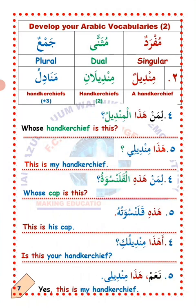Wahid, number one: Liman hadhalihi mindil? — Whose handkerchief is this? Answer: Hadha mindili — this is my handkerchief. Ithnan: Liman hadhalihi kalansuwa? — Whose cup is this? Answer: Hadhihi kalansuwatuhu — this is his cup. Arba, number four: Ahadha mindiluk? — Is this your handkerchief? Answer: Na'am, hadha mindili — yes, this is my handkerchief. La'allaka fahimt? I hope you understand. MashaAllah.